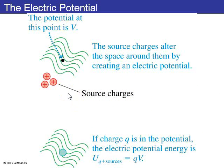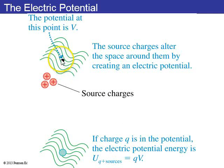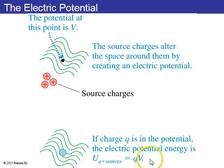Electric potential is a property of space. If you have some source charges over here, they alter space so that the electric potential at a given point is V. Then if you put a probe charge Q at that point where the electric potential is V, it has an electric potential energy of Q times V.